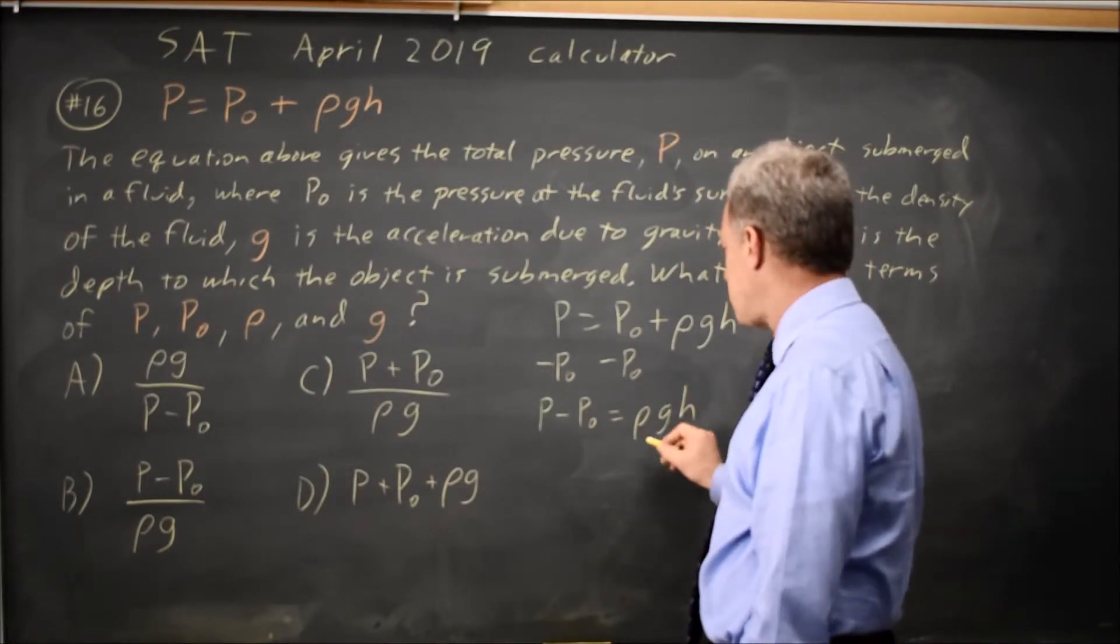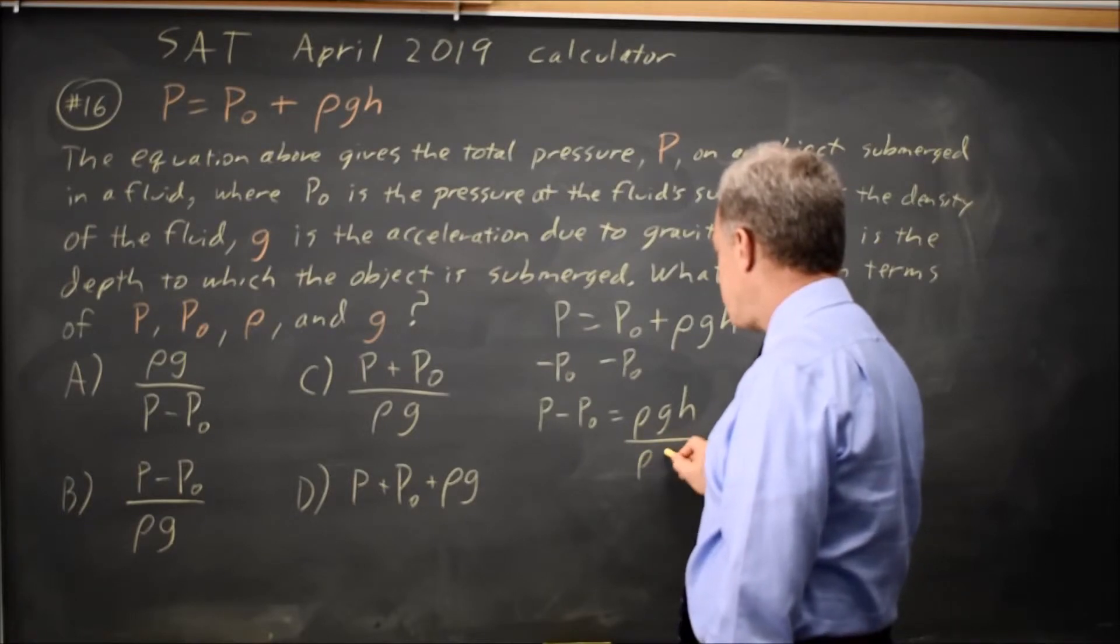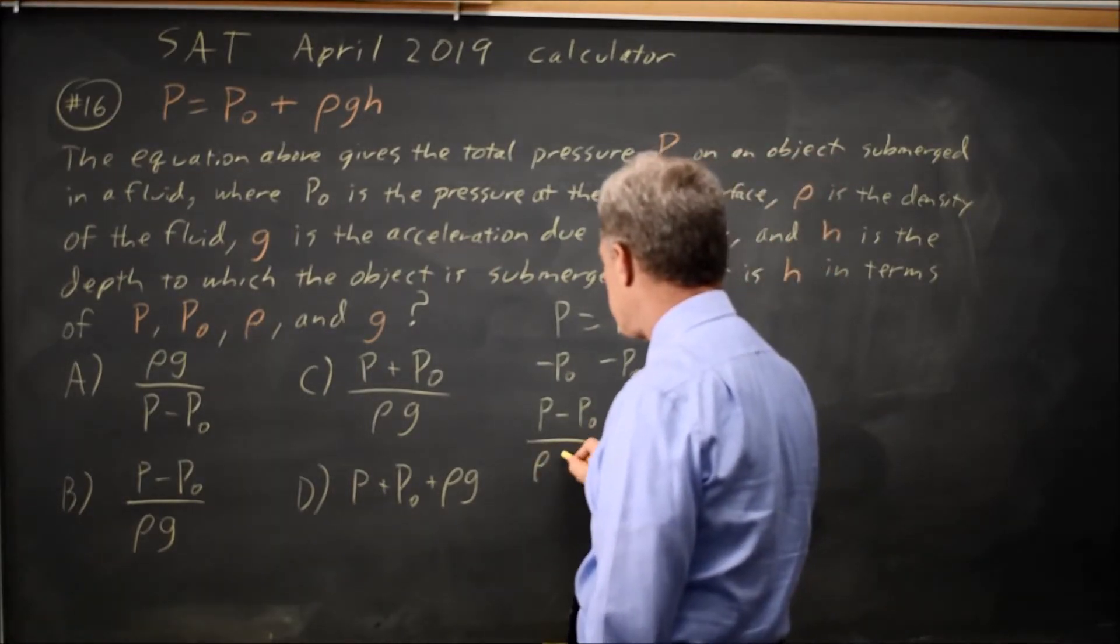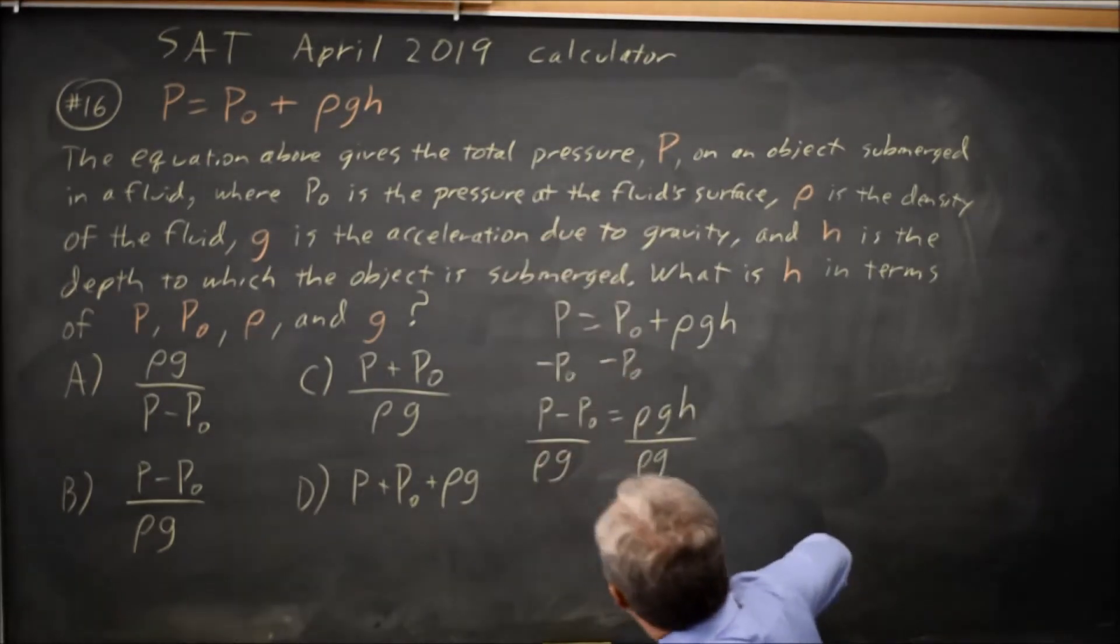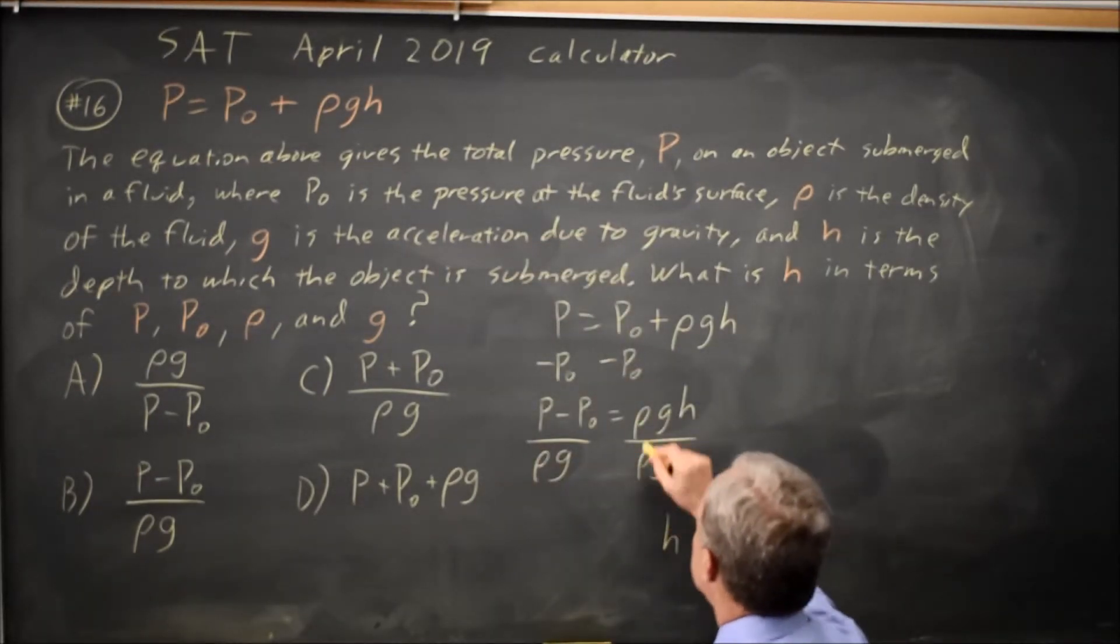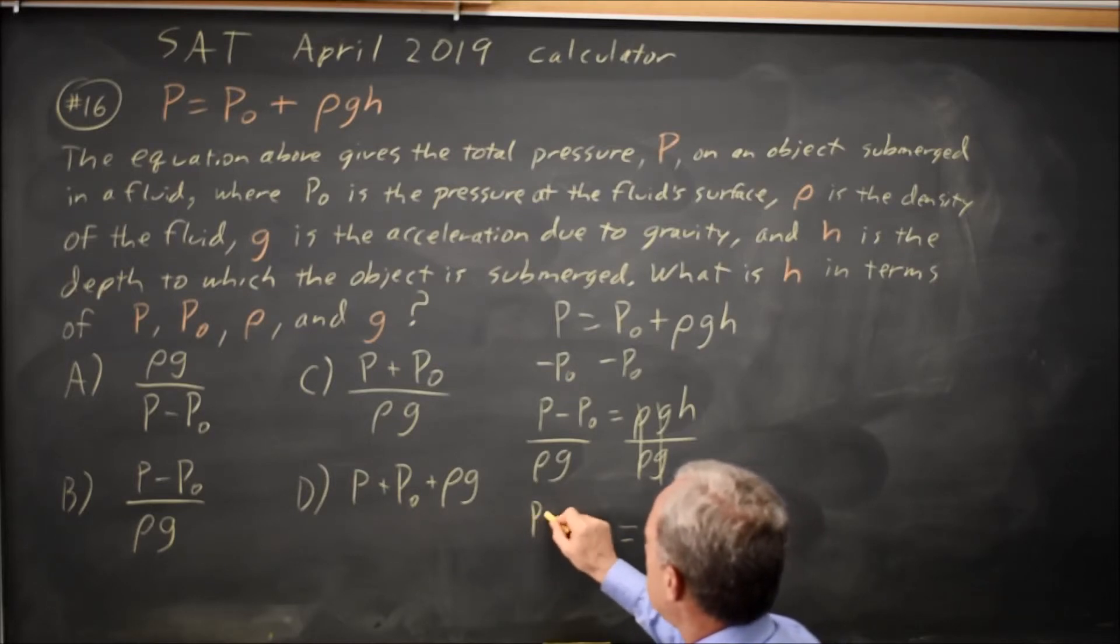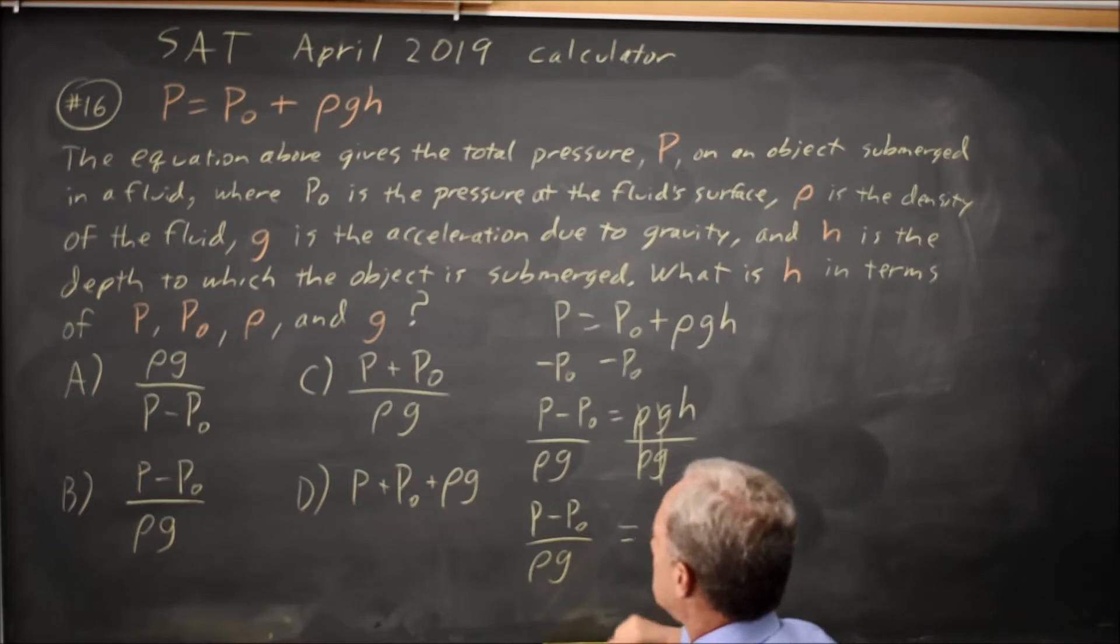And we want H by itself, so I'm going to divide by rho G because we're multiplying by rho times G. And that gives us H by itself on the right because rho times G over rho times G is 1 equals P minus P0 over rho times G on the left.